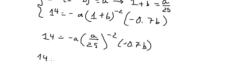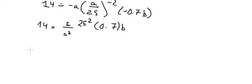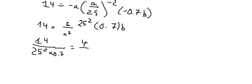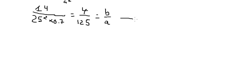Now we need to simplify. Negative and negative cancel. We get 8 over a squared in here, and 25 squared in here. 0.7 goes in here with 5 and b. So a divided by 8 cancels. We put all the numbers to the left, giving us 4 over 125. This one gives us b over 8.